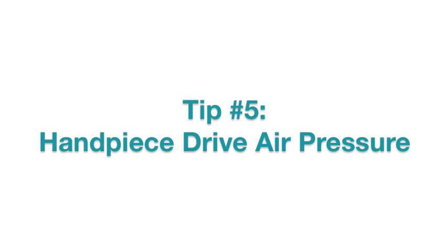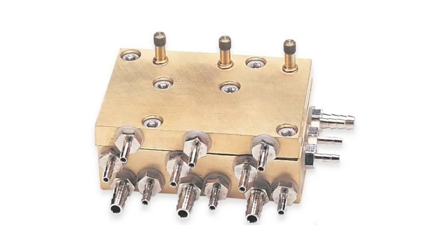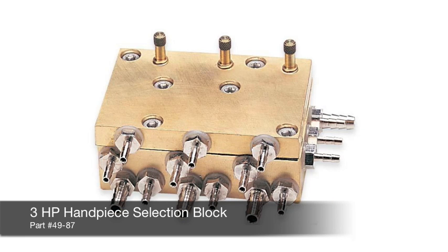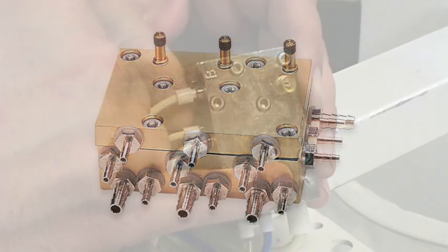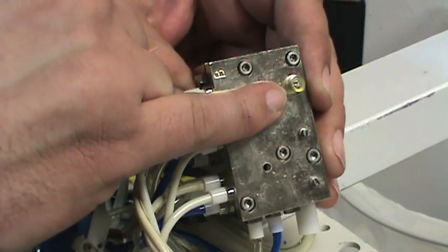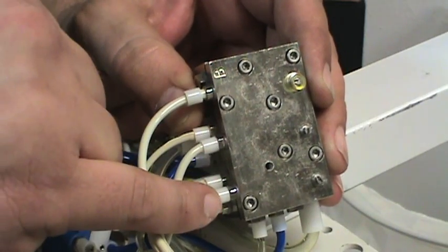Manufacturers typically suggest that you have the drive air pressure set at 30 pounds per square inch. On most units you would set your drive air pressure on the handpiece selection block similar to the block pictured here. Normally anything in excess of 40 PSI would only cause damage to the turbine without increasing performance.